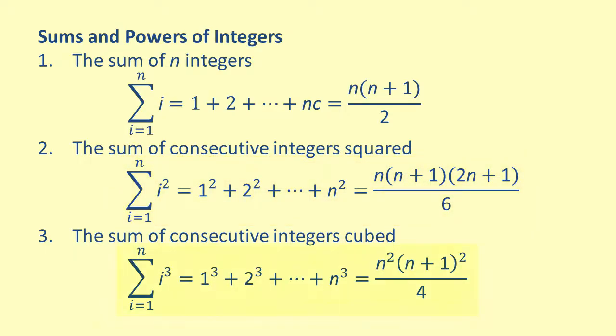Lastly, we have the formula for finding the sum of consecutive cubed integers, which is n squared times n plus 1 squared all over 4.